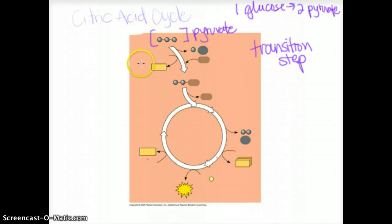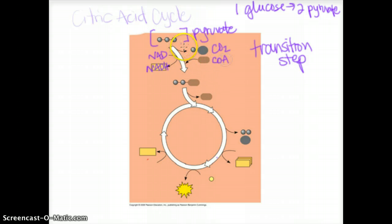We've already covered this entire step. Just as a quick review, our electron carrier NAD is reduced to NADH. We lose some carbon dioxide, and coenzyme A is added to this compound. And what we end up with is something called acetyl-CoA.